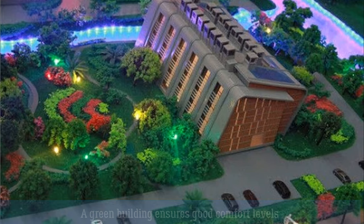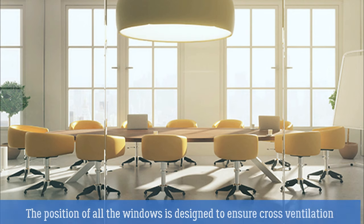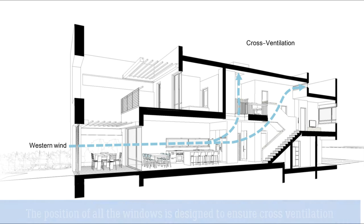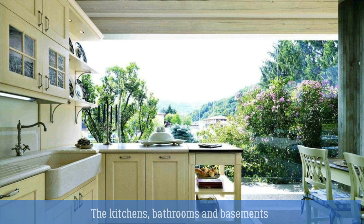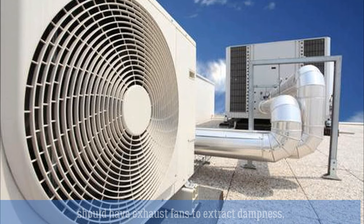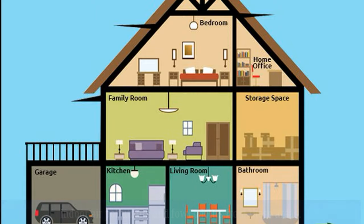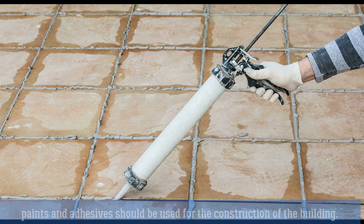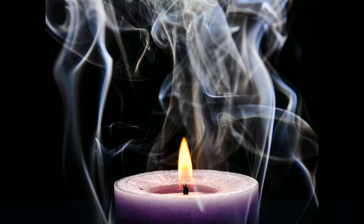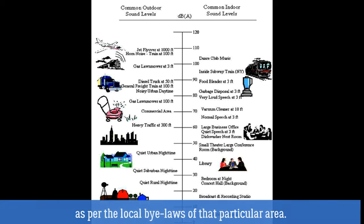A green building ensures good comfort levels along with the well-being of its occupants. The position of all the windows is designed to ensure cross ventilation, and some designs incorporate courtyards to allow cool air to flow within the building. Kitchens, bathrooms, and basements should have exhaust fans to extract dampness, indoor air pollutants, and foul odors. Only low-VOC sealants, paints, and adhesives should be used for construction, as they do not cause indoor air pollution and do not emit toxic gases. The indoor and outdoor noise levels should be within acceptable limits as per local bylaws.